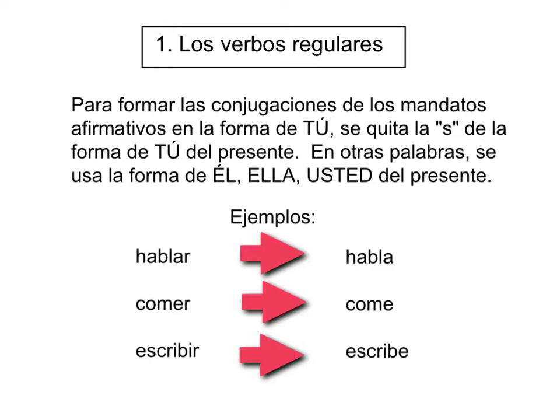Para formar las conjugaciones de los mandatos afirmativos en la forma de tú, se quita la S de la forma de tú del presente. O en otras palabras, se usa la forma de él, ella, usted del presente. You can think of it either way — it's dropping the S from the tú form, or just using the third person singular él/usted form in the present tense.